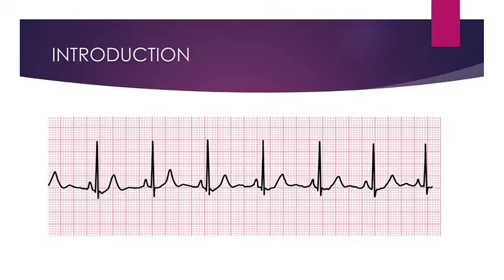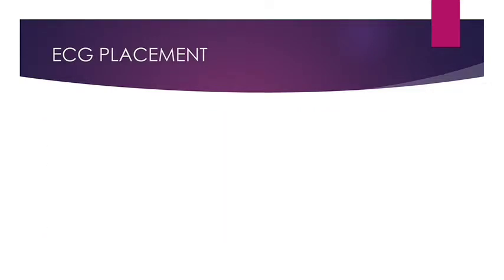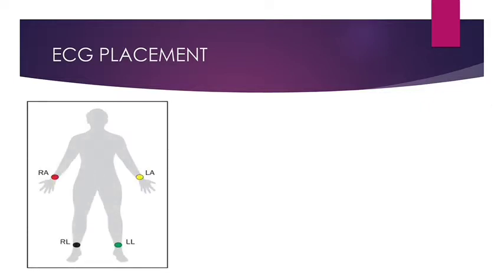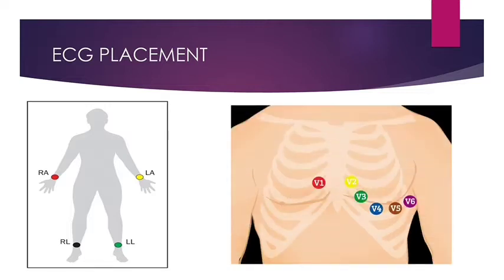Now what are the ECG placement sites? Mostly 12-lead ECG is used in clinical practice. Ten electrodes are required to produce a 12-lead ECG. First, 4 electrodes on 4 limbs: right arm has a red color cord, left arm has yellow, right leg has black, and left leg has green. Then 6 leads on the chest: V1, V2, V3, V4, V5, and V6.